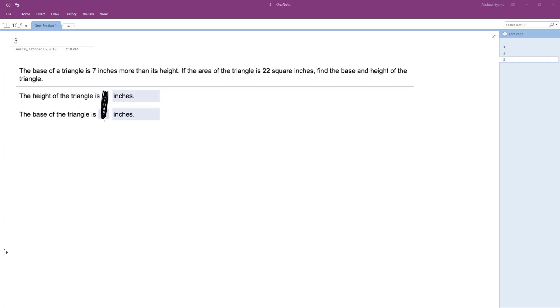The base of a triangle is 7 inches more than its height, and the area of the triangle is 22 square inches. So the base of a triangle is 7 more inches than its height. So x plus 7 will make the height x.